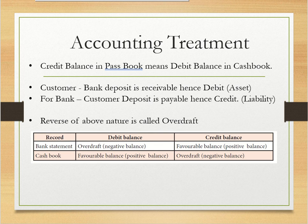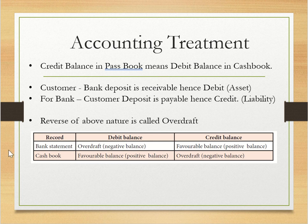When we withdraw, we have a debit balance in the bank account. So the bank statement shows a debit balance meaning overdraft. In the cash book, a debit balance means a positive balance. Similarly, a bank statement credit balance means a favorable balance, while a cash book credit balance means overdraft.